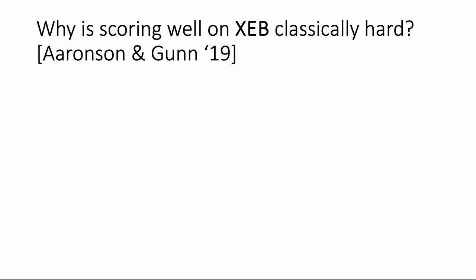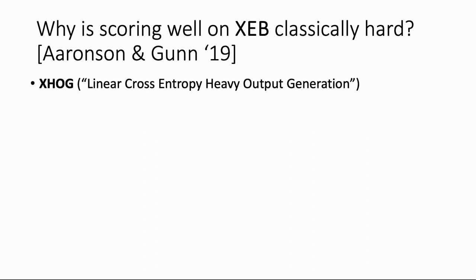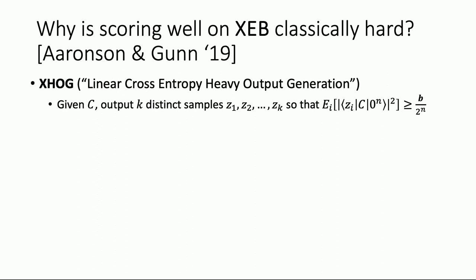Here's XHOG — X stands for XEB. Given circuit C, output K distinct samples Z1 through ZK such that the arithmetic mean of the ideal output probabilities of those samples, with respect to the ideal circuit, is greater than or equal to B over 2^N. This matches XEB precisely: it's hard to output strings that occur with slightly heavy probability, where heavy now means heavier than one over 2^N.